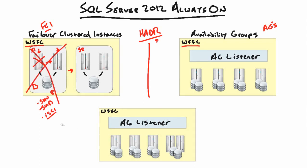This is where multi-subnet clustering comes into play. If our entire site goes down — the SAN, something goes terribly wrong — our cluster will recognize it and redirect users over to our second subnet. Users are unaffected and can keep working while we recover from the disaster in subnet one. The one trick is you need replication set up across your shared storage. That's FCIs in a nutshell.